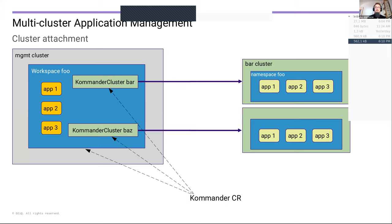Commander has the concept of a workspace, which is a CRD we ship with Commander, basically reflected by a Kubernetes namespace. In that namespace you create Commander clusters that are reflected by kubefed clusters, and these clusters are attached to Commander, which then takes care of managing them. In this picture we have three applications defined in the workspace. These applications are installed on each attached cluster in that workspace — so if you attach a third cluster, all three applications would be installed automatically on that cluster.